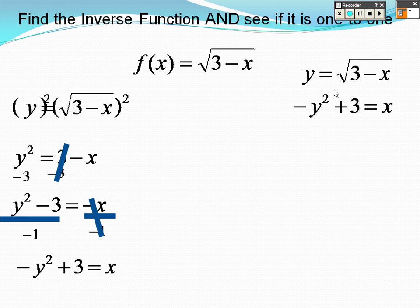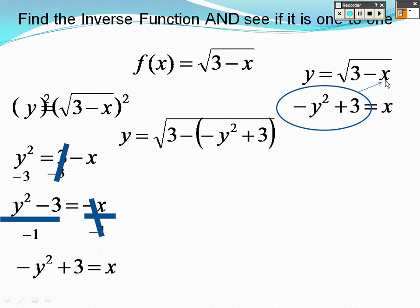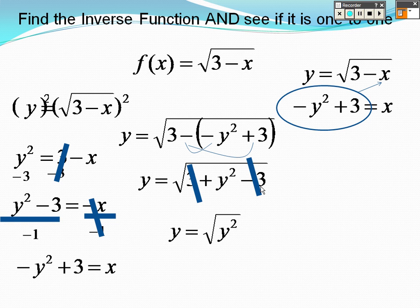Those are my two functions. I'm going to take all of this and plug it in for x. When I do that, a negative has to go through to both items. So I end up with 3 plus y squared minus 3. 3 minus 3 cancels out, and the square root of a square cancels out. So far, so good.